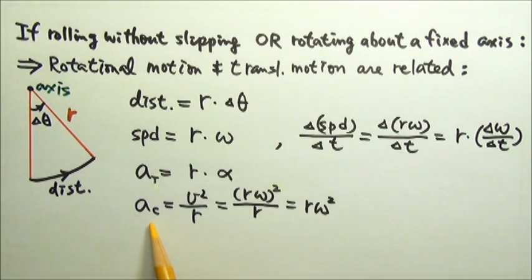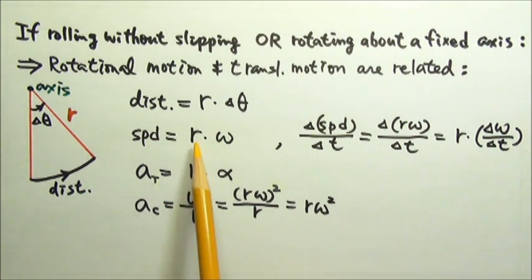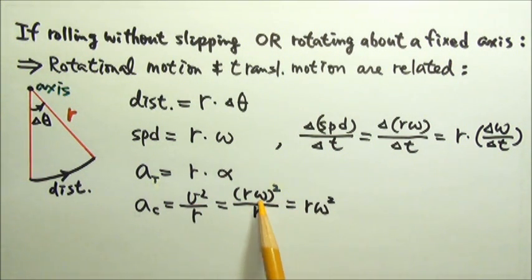As for the centripetal acceleration, it is still the same, v squared over r. But in this case, speed is r omega, so we can substitute v with r omega. Then we can cancel one of the r's, and this gives us r times omega squared.